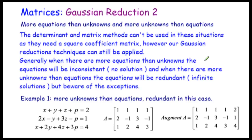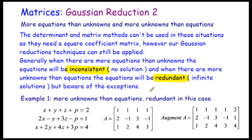Generally speaking, if there are more equations than unknowns, the equations will be inconsistent — that is, they don't have any solution whatsoever. And if there are more unknowns than equations, the equations will be redundant, meaning there's an infinite number of solutions. You have to be aware of the exceptions, and I will go through one exceptional case. So today we are just having a look at three examples.